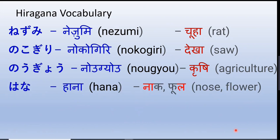Hana is an example of intonation. If you stress on Ha — Hana — it means nose. If you stress on Na — Hana — it means flower. This is the example of intonation we discussed in the last lesson: based on stress, the meaning changes. Hana is nose and Hana is flower.